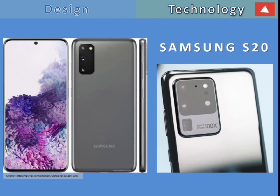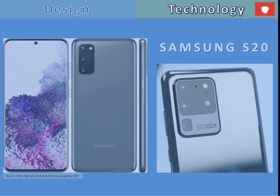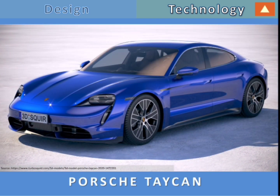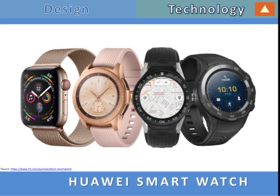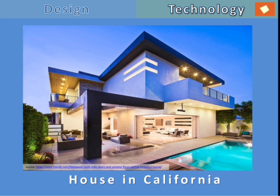Here you can see a smartphone, which is an immediate application of design and technology. You can also see a very elegant car, smart watches, and a house situated in California. All four of these examples are the absolute application of design and technology, and I am sure that these four products are very appealing to you. Appealing means attractive.